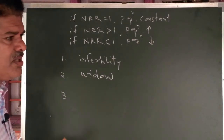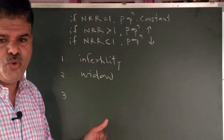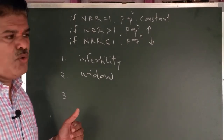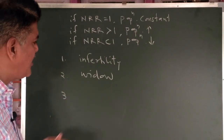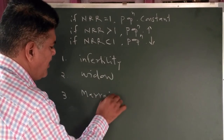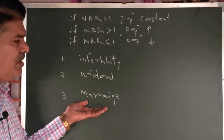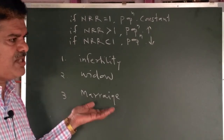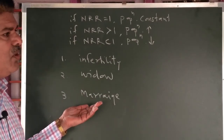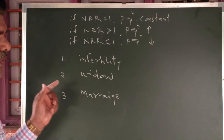Again, there are some girls who are not going to marry at all, so marriages are also a problem with NRR. She may be able to give a child but she does not marry, so in that case NRR also gives some differences.